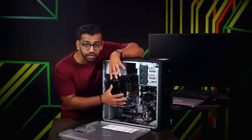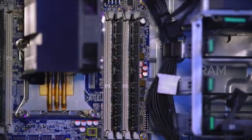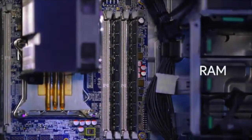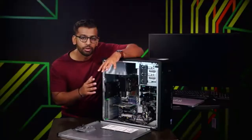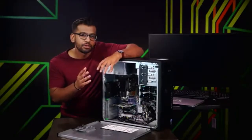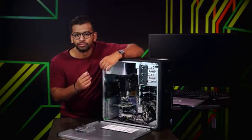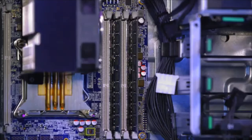The CPU communicates heavily with this component right here — RAM, or random access memory. RAM is our computer's short-term memory. We use this component when we want to store data temporarily, like when you're typing something into a chat or a piece of text in a word processor. This information is stored in the RAM.